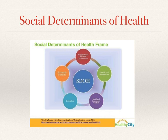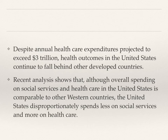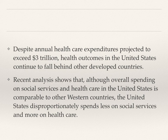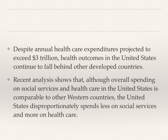This is some background information to understand about the U.S. healthcare system. Despite annual healthcare expenditures projected to exceed $3 trillion, health outcomes in the United States continue to fall behind other developed countries. Recent analysis shows that although overall spending on social services and healthcare in the U.S. is comparable to other Western countries, the United States disproportionately spends less on social services and more on healthcare — meaning we don't invest enough in supporting areas that could help improve health outcomes beyond surgery or direct interventions.